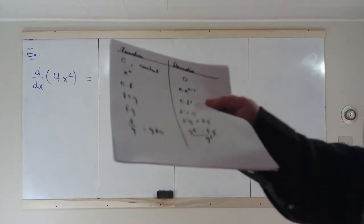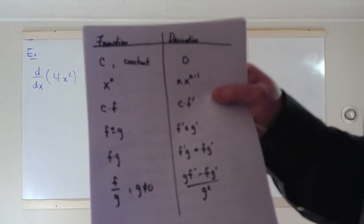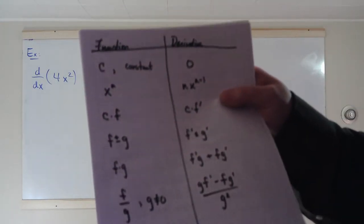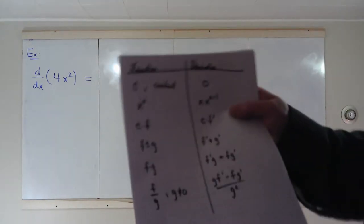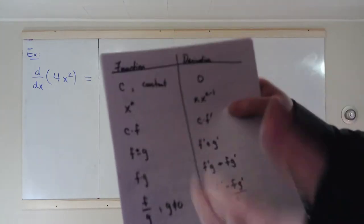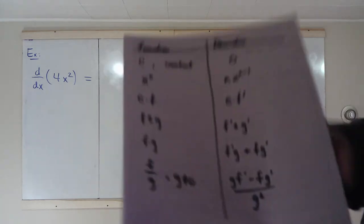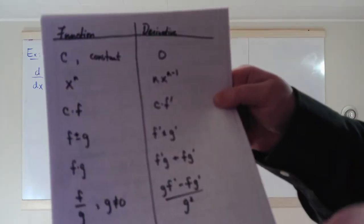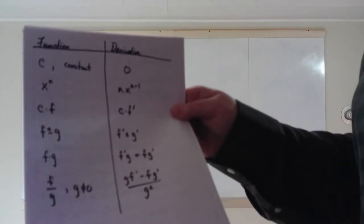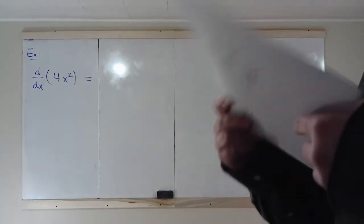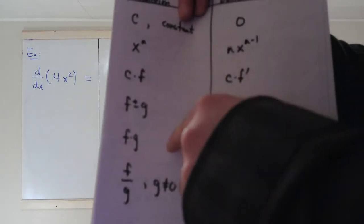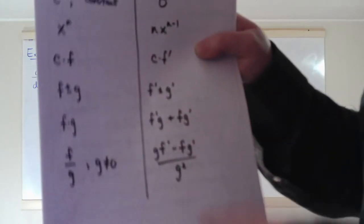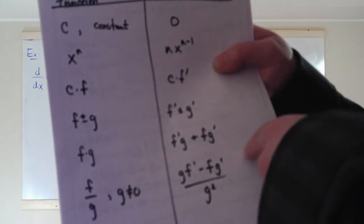The last two on this first page — the derivative of a product and the derivative of a quotient — are not the same as limits. If you want the derivative of a product, you can't just do the derivative of the first times the second. You have to use the product rule and quotient rule. Derivative of f times g is f prime g plus f g prime. For a quotient: bottom times derivative of the top, minus top times derivative of the bottom, over bottom squared.